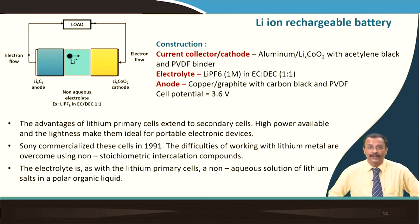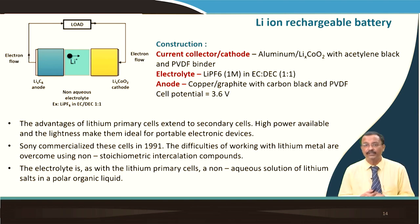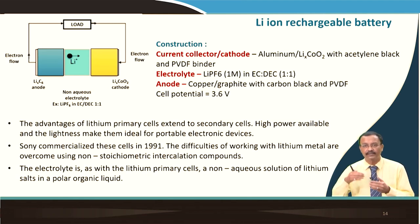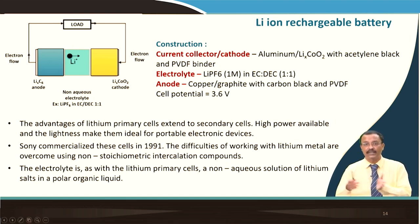Now we talk about lithium rechargeable batteries. The current collector is aluminum, and the typical cathode is lithium cobalt oxide mixed with acetylene black and PVDF binder — a composite electrode. The electrolyte is 1 molar LiPF₆ dissolved in EC and DEC in a 1:1 ratio. The anode uses copper as a current collector, with graphite, carbon black, and PVDF binder. The cell potential is 3.6 V. This was commercialized by Sony in 1991, and the lightness of lithium makes it ideal for portable electronic devices.